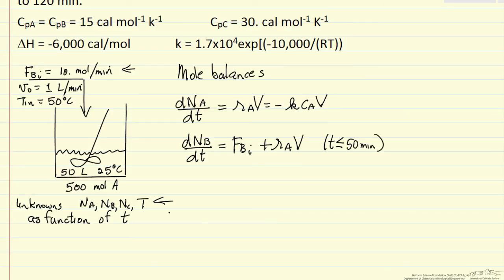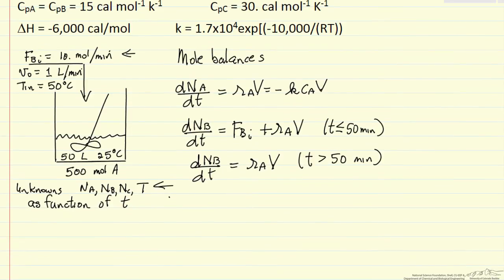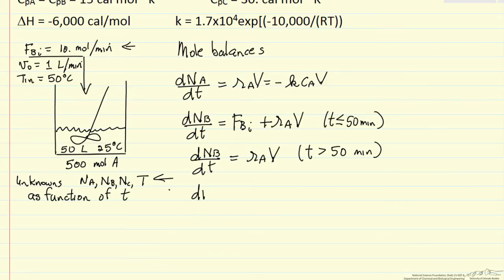For longer times, the change in the number of moles of B with respect to time is just R sub A times the reactor volume. This is for time greater than 50 minutes. We have a similar equation for the number of moles of C with respect to time: rate of C times volume. The rate of C is minus the rate of A. One mole of A reacts, we make one mole of C times volume.